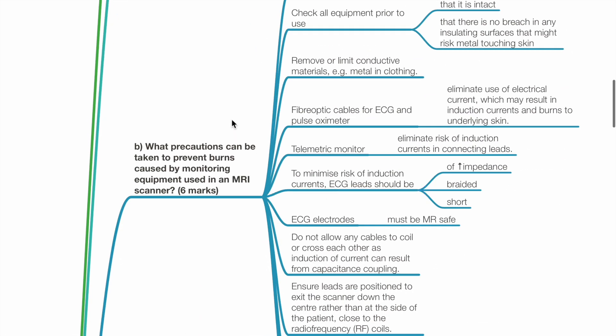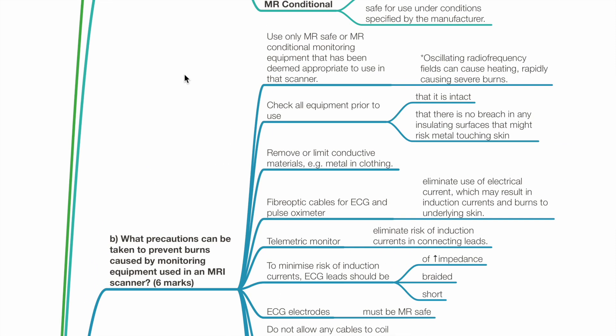Part B: What precautions can be taken to prevent burns caused by monitoring equipment used in an MRI scanner? Use only MR-safe or MR-conditional monitoring equipment deemed appropriate for that scanner. Check all equipment prior to use to ensure it is intact and there is no breach in any insulating surfaces that might risk metal touching skin.